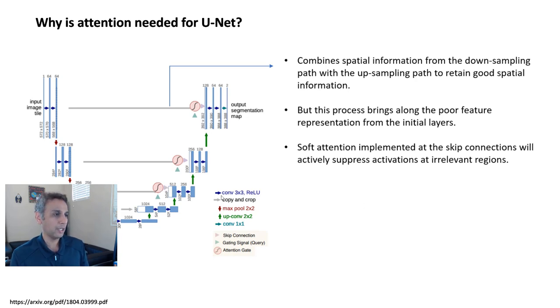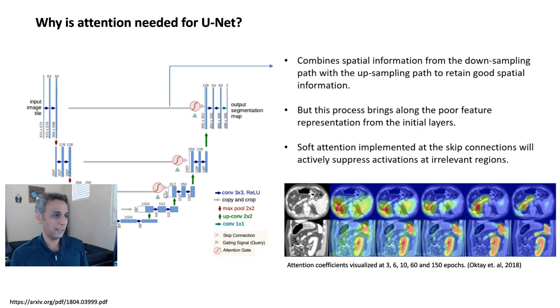We'll get to that in a second. So I just want to make sure I explain the two. I explain this block right there. Now here is directly from the paper I just showed you, an image directly from that paper, attention coefficients. So this is 3, 6, 10, 60, and 150 epochs. As you see, as the number of epochs go by, the weights or the attention is more and more focused towards the region of interest right there. So that's all we are trying to achieve.